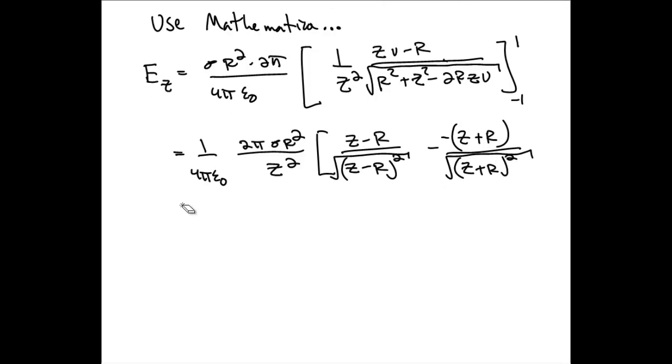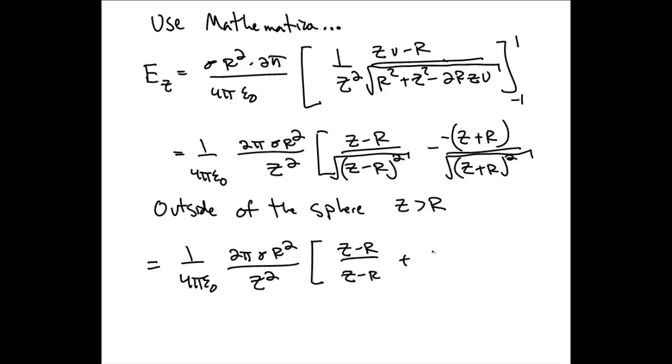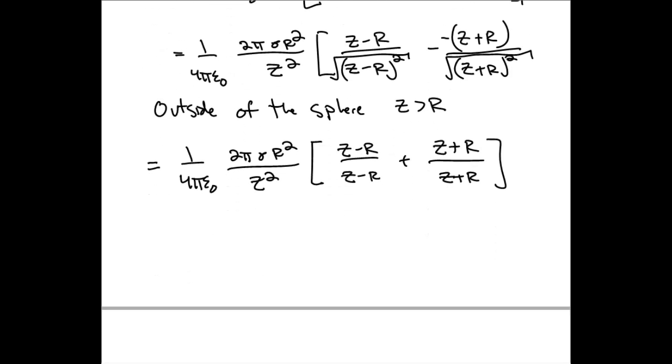Now, we have to be careful when we're taking the square root of these quantities, make sure we get our signs right. So, as long as we're working outside of the sphere, where z is greater than r, then we can take the square root directly, and the quantity in square brackets will then just give us an extra factor of 2.